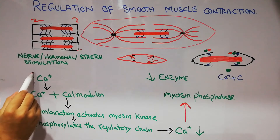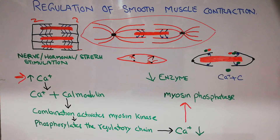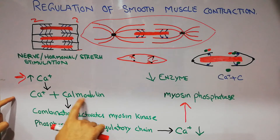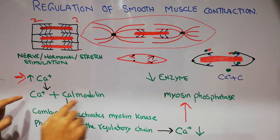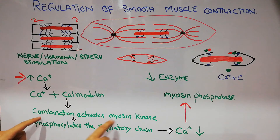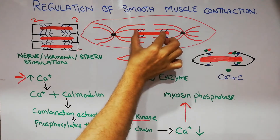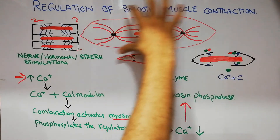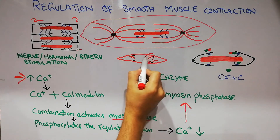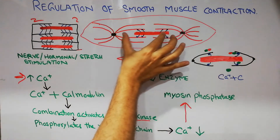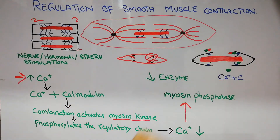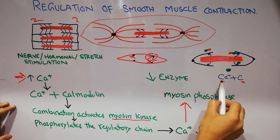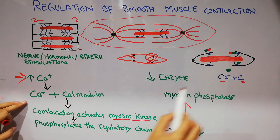Instead of troponin, smooth muscles have another protein known as calmodulin. As soon as the calcium level increases inside the smooth muscles due to any stimulus, this calcium combines with the calmodulin protein. The combination of calcium and calmodulin activates an enzyme known as myosin kinase. This thick filament has been shown here — this contractile unit was enlarged from a small muscle fiber, with one actin and one myosin filament shown.